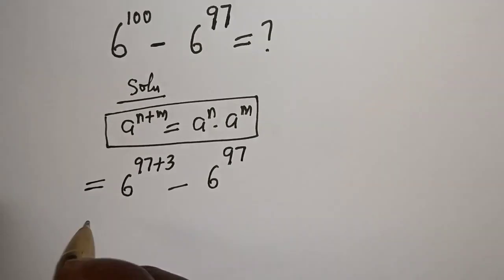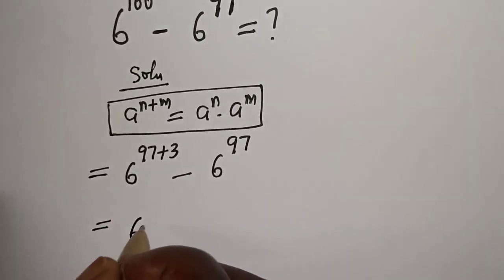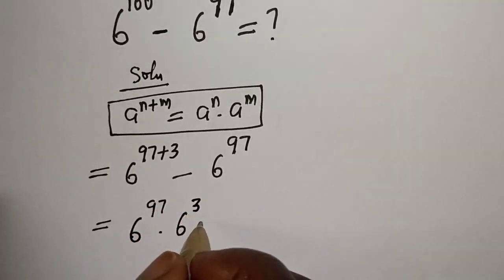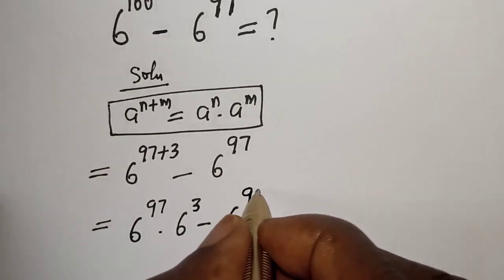From this rule, this can be written as 6 raised to power 97 multiplied by 6 raised to power 3, minus 6 raised to power 97.